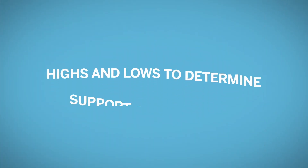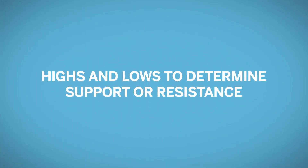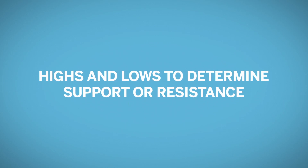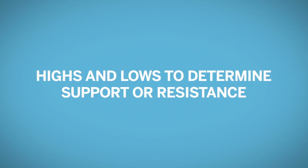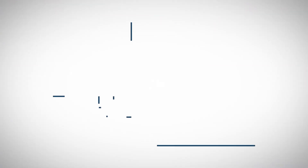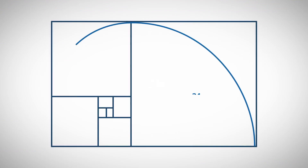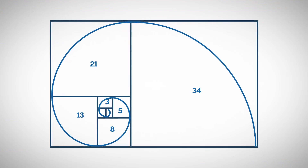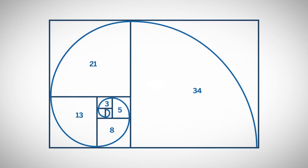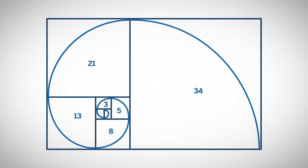Fibonacci analysis can be summarized as a means to identify patterns in price and watching for those patterns to repeat. Fibonacci ratios, like any piece of technical analysis, can be combined with other indicators to form the basis of your trading decision.